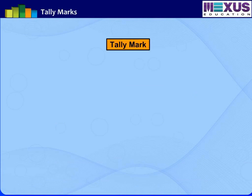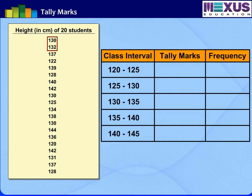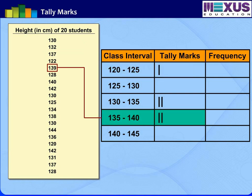A tally mark is a vertical line used for marking while calculating larger data. Let us learn it with the previous example. The height 130 cm and 132 cm belongs to class interval 130 to 135. So we have to enter two tally marks in the beside column, one for each value. Mark the other numbers in the tally column in whichever class it belongs — one tally for each value.